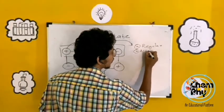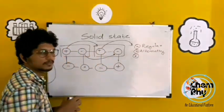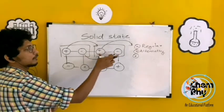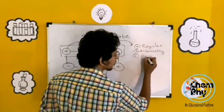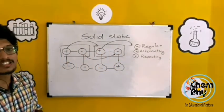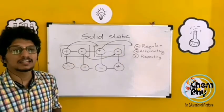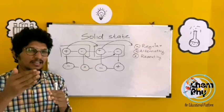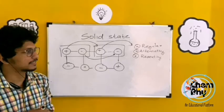The constituent particles in solids are arranged in an alternating and repeating pattern. In crystalline solids, the constituent particles exist in a regular, repeating, alternating arrangement.